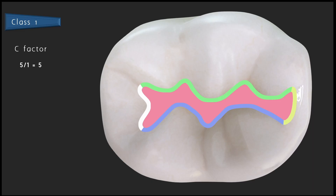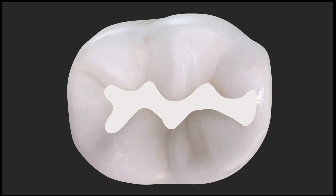In a class 1 tooth preparation, we can see that there is a buccal wall, a lingual wall, a mesial and distal wall, and the pulpal floor — five surfaces that will be bonded by the composite. But at the same time, the occlusal surface is free. If you fill the entire cavity preparation with a single increment and light cure it, it will get detached from the walls because of shrinkage and there will be a gap formation between the tooth and the restoration.